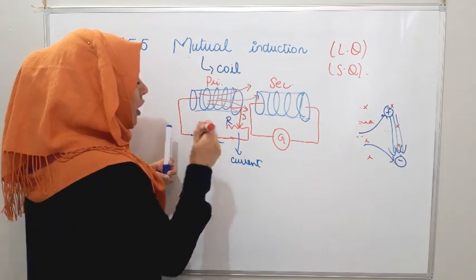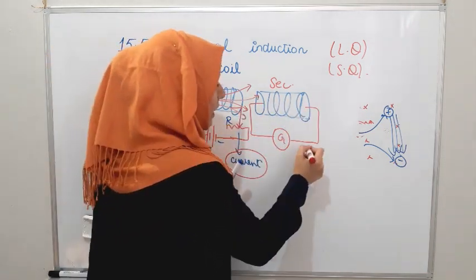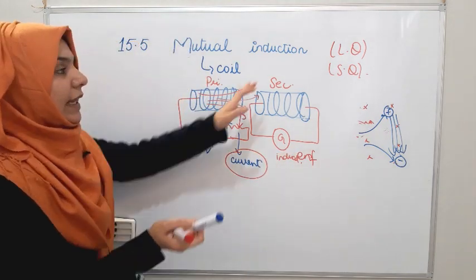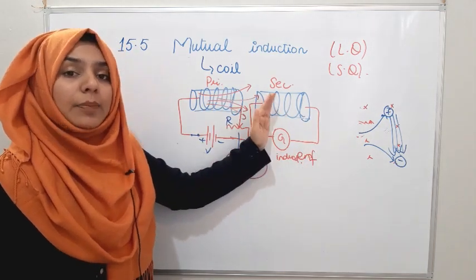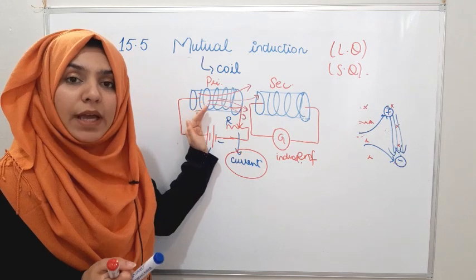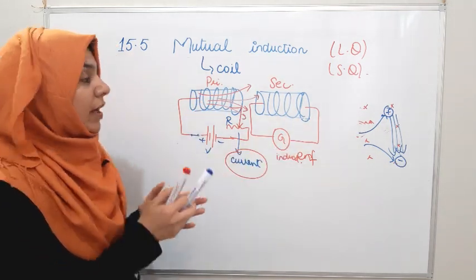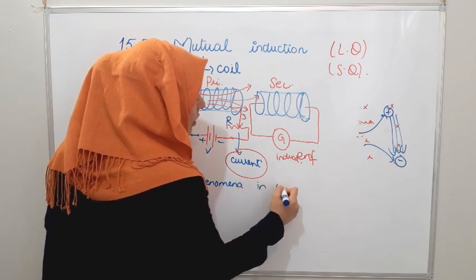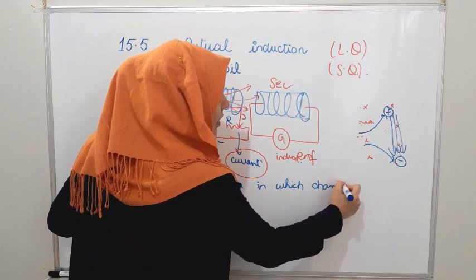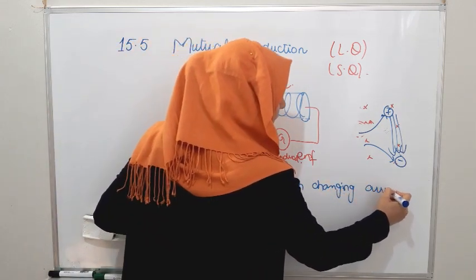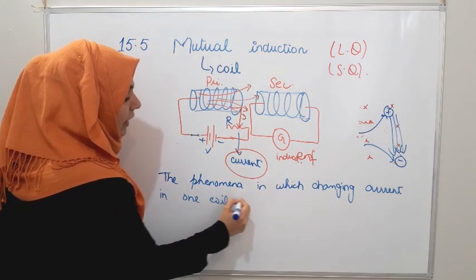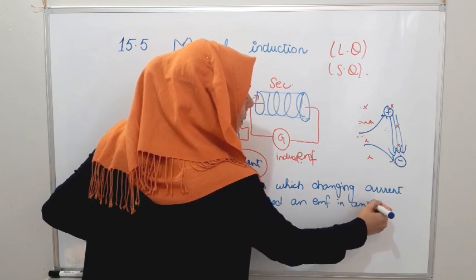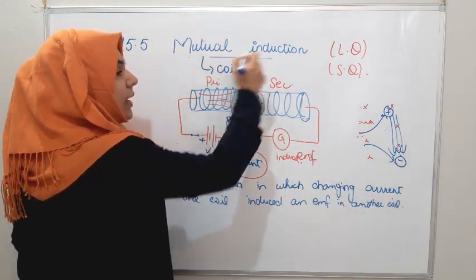The voltage is generated, so what happened? You changed the current in the primary coil, and an induced EMF was produced in the secondary coil. Mutual induction means that you didn't connect the circuits together — you kept them as separate things — but changes in one coil produced changes in the other. This phenomenon, in which a changing current in one coil induces an EMF in another coil, is known as Mutual Induction.